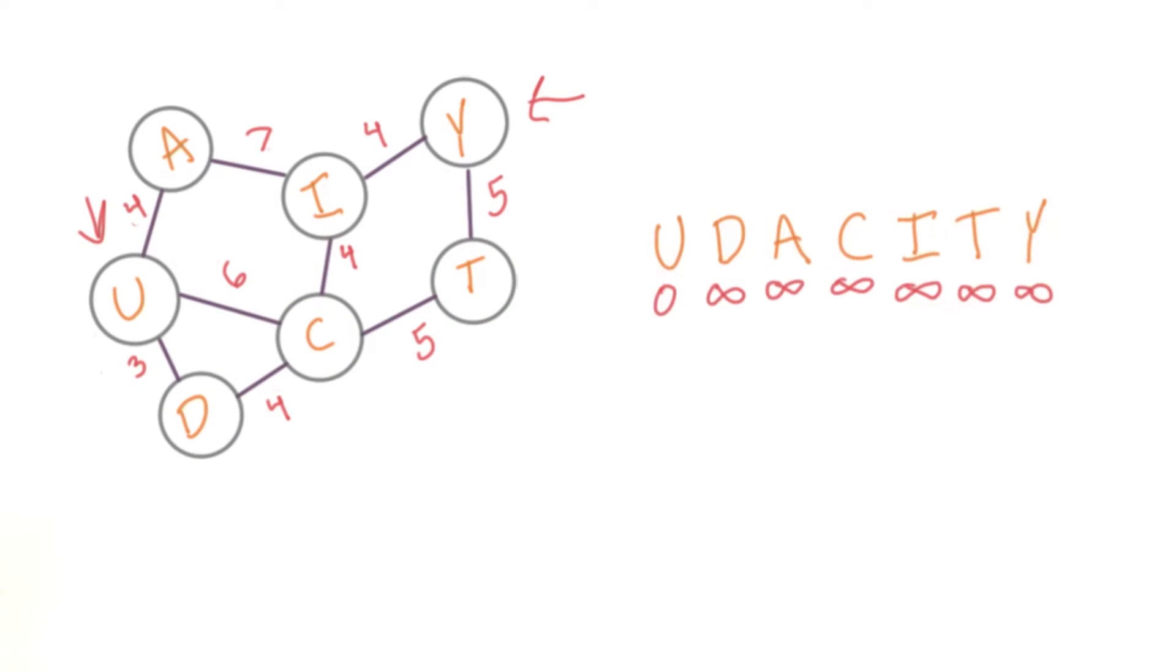The distance value we start with is infinity. This is a placeholder value that we'll update whenever we discover a node and have an actual distance to store. The node we're starting with will have a distance of 0.